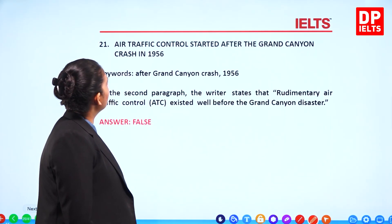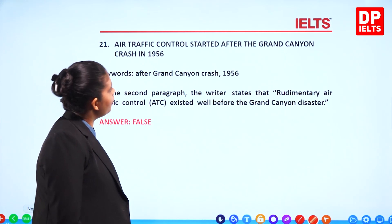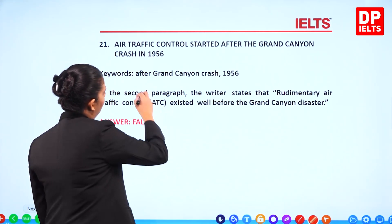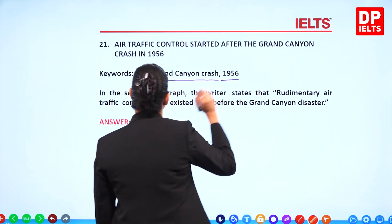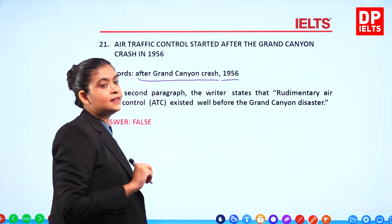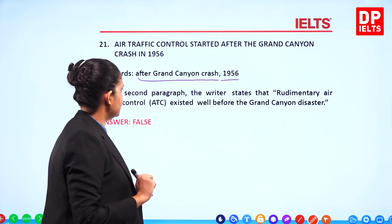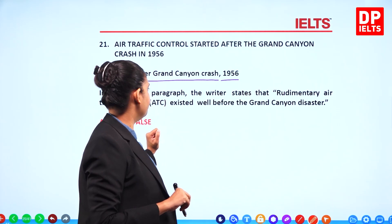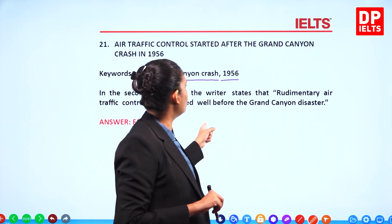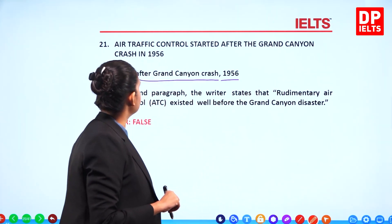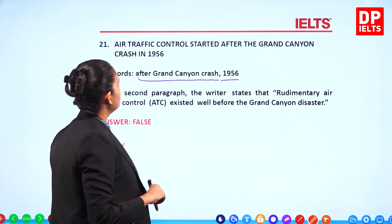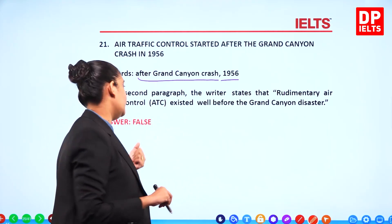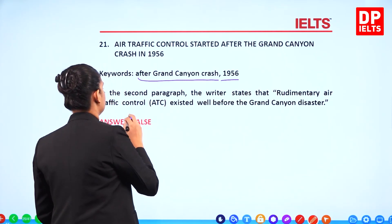Question 21: 'Air traffic control started after the Grand Canyon crash.' In the second paragraph, the writer states that rudimentary ATC existed well before the Grand Canyon disaster. So it was not started after — it was there well before. The answer is False.